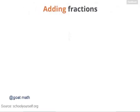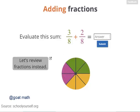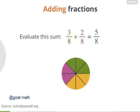Let's add some fractions. Suppose you have 3 eighths, and you want to add another 2 eighths. What's the sum? Let's see that visually. Here's a dot, and let's label 3 eighths. And then, let's label another 2 eighths. So, all together, what fraction do we have? Right. In total, we have 5 eighths here. So, 3 eighths plus 2 eighths equals 5 eighths.